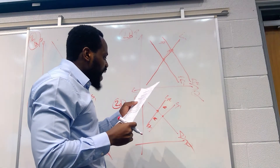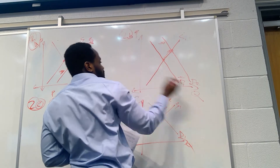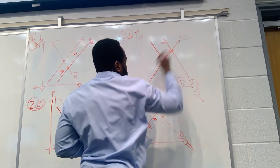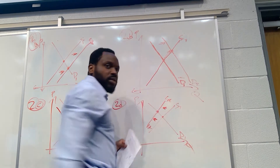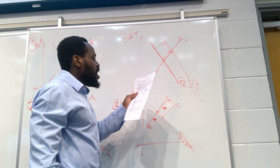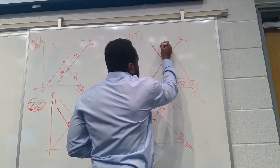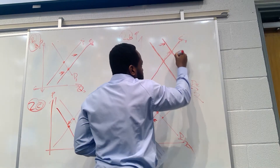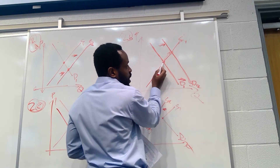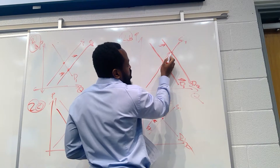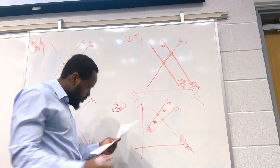Question 2b says the demand for central heating rises. We have our supply curve S1 and demand curve D1 in period one. Nothing about price — just more demand. That means we have a shift in demand to the right, to D2. As a result, we're going to have a movement along the supply curve to this new equilibrium point where S1 meets D2.